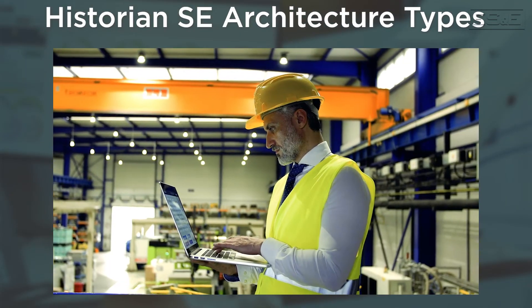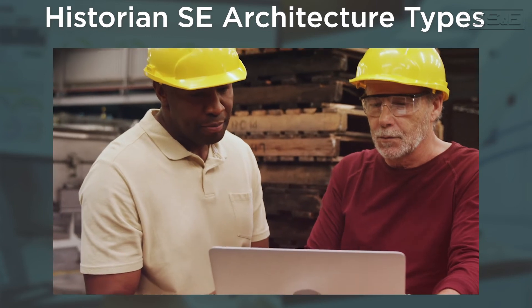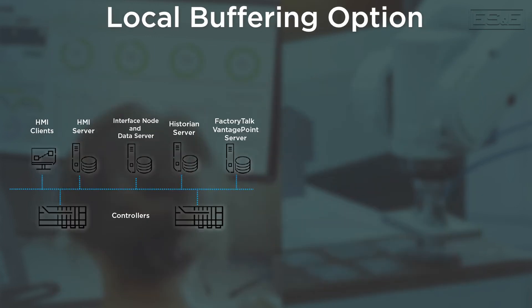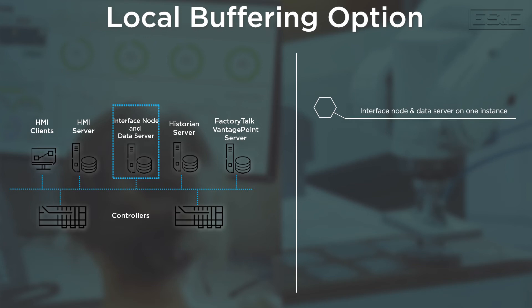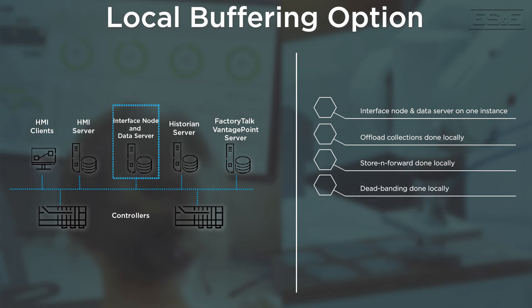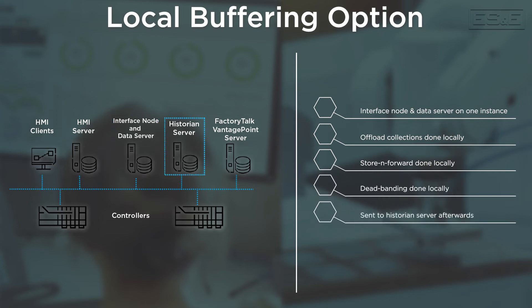Let's talk about some of the typical architectures you will see when implementing Historian SE. One of the simplest is what we call the local buffering option — that is when you have the interface node and the data server all located on one instance or one OS. Data collection, store-and-forward, and dead-banding are done at that local machine and then sent to the Historian SE server. The only split is the interface node and data server on one machine, and the historian — which does the archiving and asset framework — on a different machine.